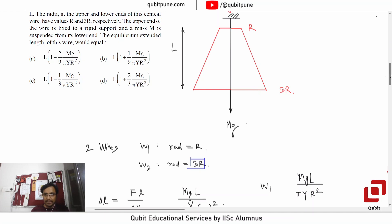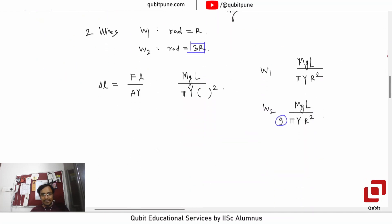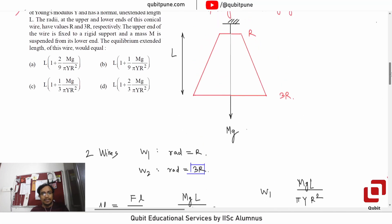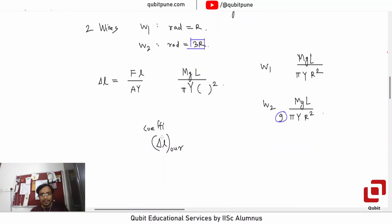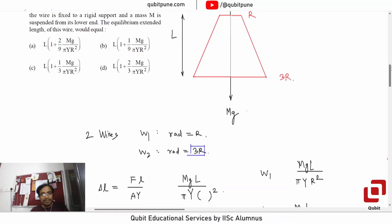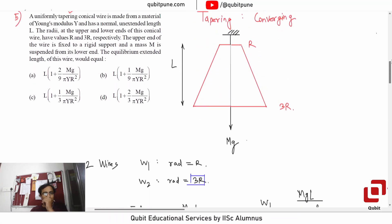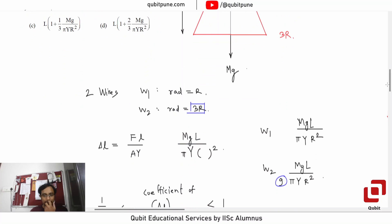So which will have larger elongation? First wire. The second wire will have 9 times smaller than that, obviously because it's thicker. So our extension, the coefficient, should be less than 1 but greater than 1 by 9. So definitely not 1 by 9. So qualitatively we could eliminate only one option.